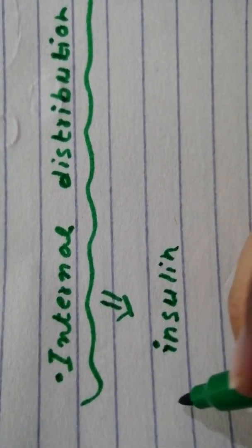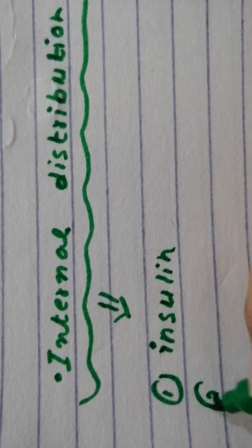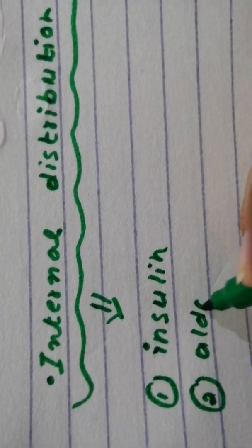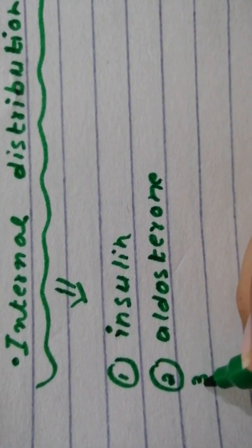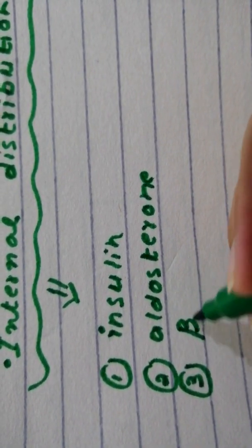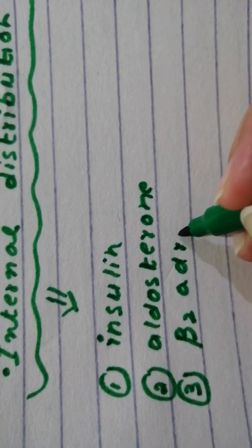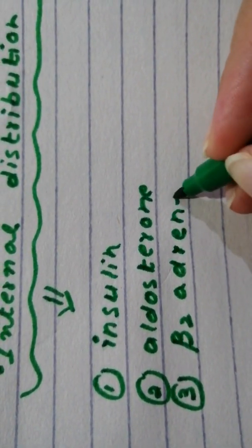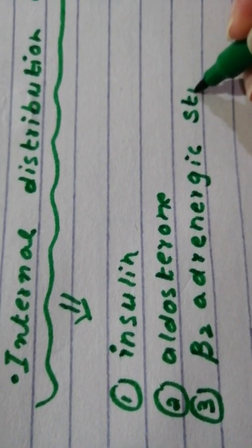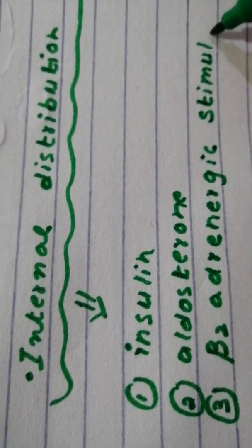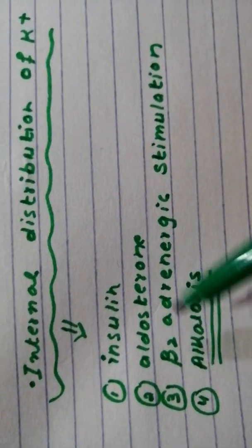There is insulin, there is aldosterone, there is beta-2 adrenergic stimulation, and there is alkalosis. Beta-2 adrenergic receptors basically refer to a type of receptors of the autonomic nervous system. Alkalosis increases this entry of potassium into the cells.